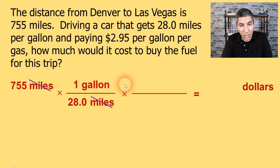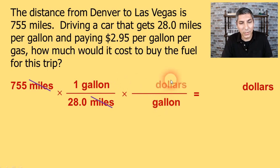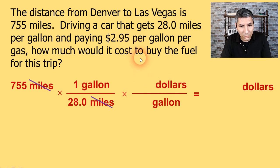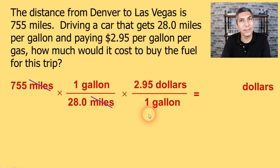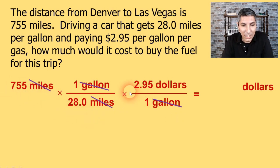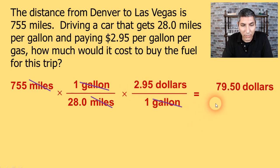For the next conversion factor, let's put gallons on the bottom and dollars on top, since we're converting to dollars. Do we know how many dollars per how many gallons? Yes — the question tells us it's $2.95 for every one gallon of gasoline. So now I can cancel gallons top and bottom. On my calculator, I take 755 divided by 28.0 times 2.95, and I get an answer of about $79.50.